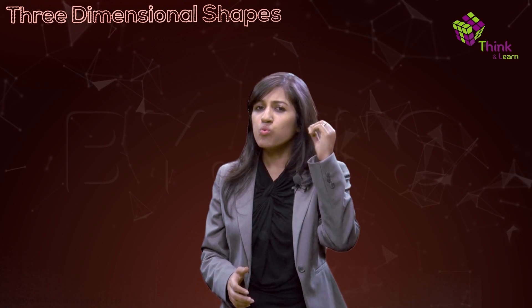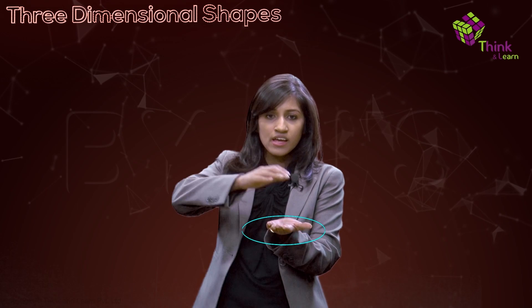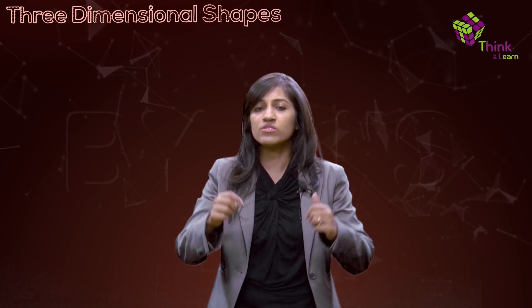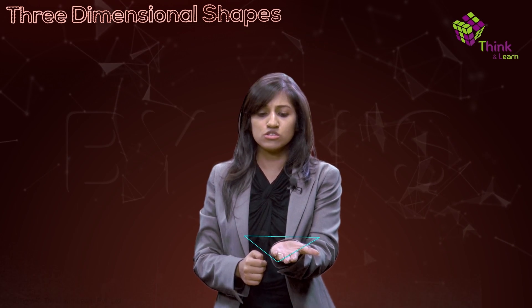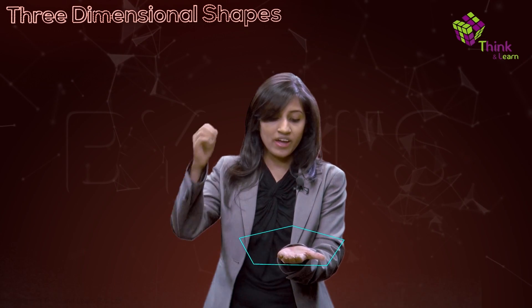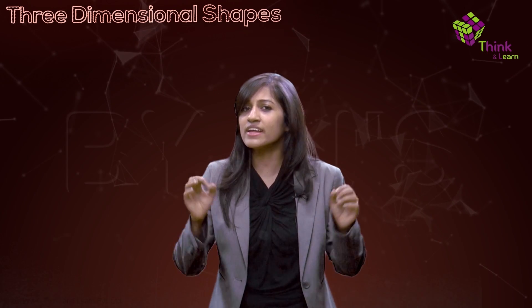Let's do something really interesting now. Let's visualize what 3D actually is. I have some shapes over here — watch carefully what happens. If I take a circle and do this to it, something interesting happens. Let me do that with a couple more shapes. If I take a triangle, it's pretty flat — now watch what happens. Let me do that with one more shape, a fancy one: a pentagon. Wow, look at what happens!